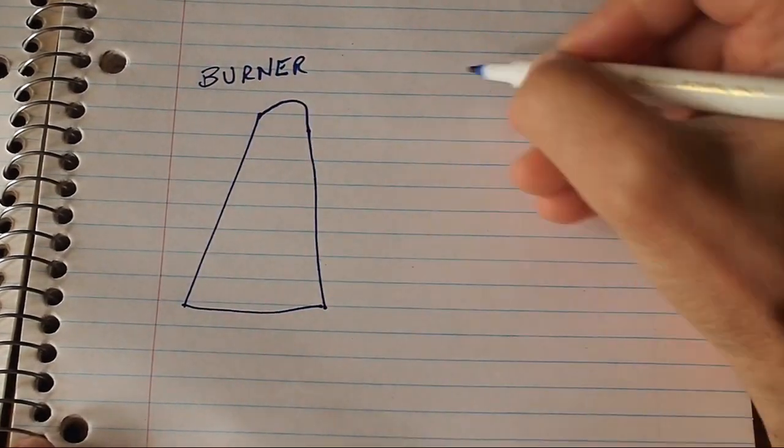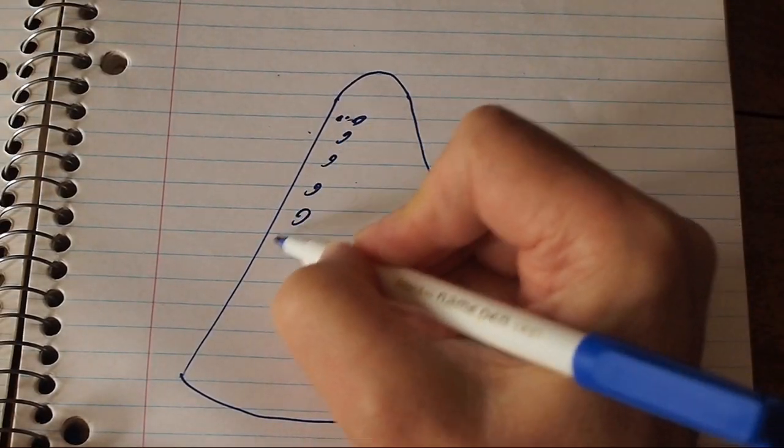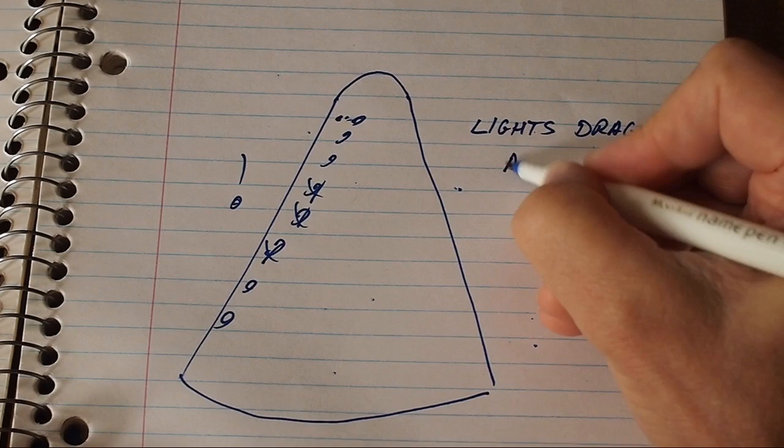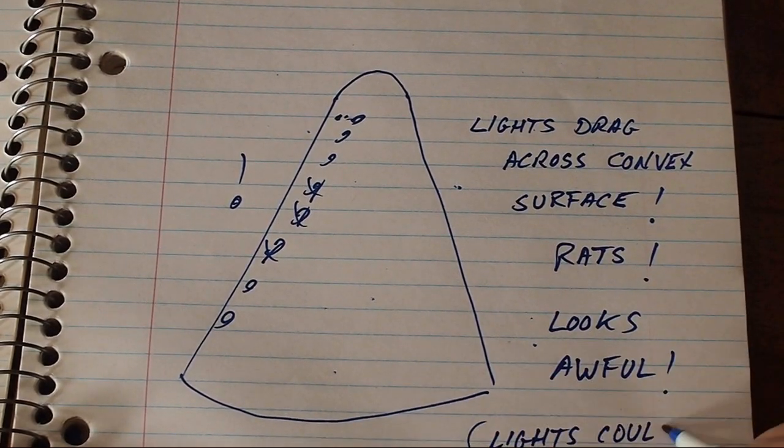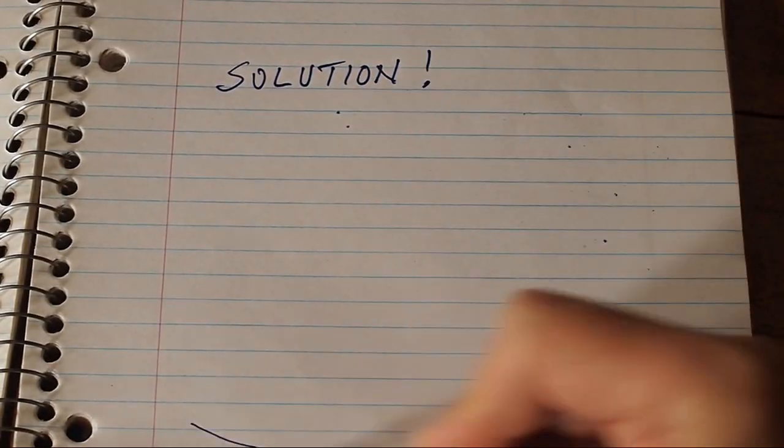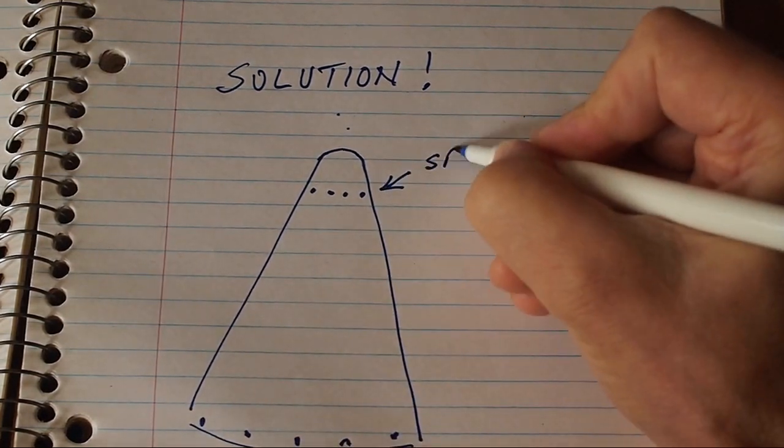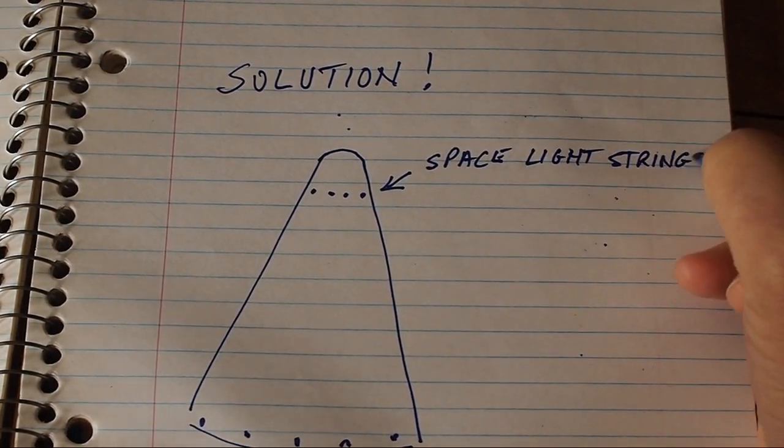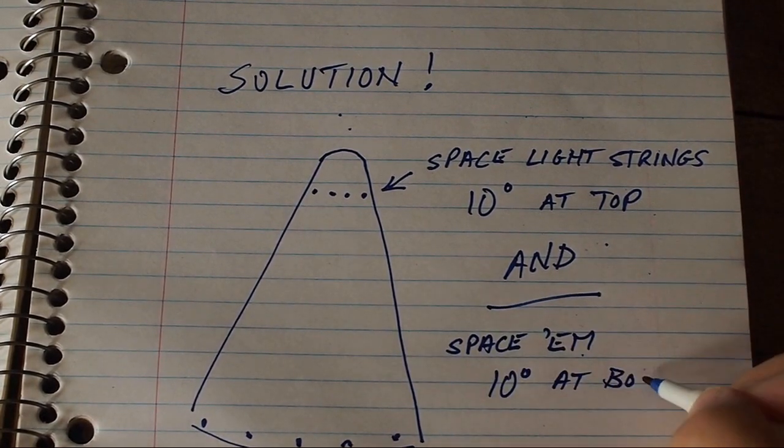Okay, so you decide to start with the burner. You look at it, it's already shaped a little bit like a Christmas tree, but you decide to exaggerate that shape so it looks even more like a Christmas tree. But you put up the lights and you discover that the lights are dragging across the sides of the burner. So you do some experimenting and you discover that the only way to have the lights equal distance above the burner surface is if the degree spacing is the same top and bottom. Say if they're spaced 10 degrees at the top, you have to space them 10 degrees at the bottom.